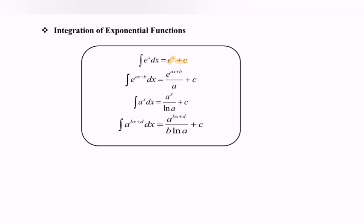Given the situation: integrate e to the power of ax plus b with respect to x. First, copy the situation where we have e to the power of ax plus b. Then kindly focus on the power — differentiate the situation — and we will have e to the power of ax plus b over a, plus c.